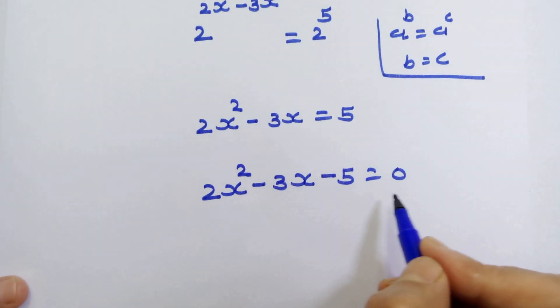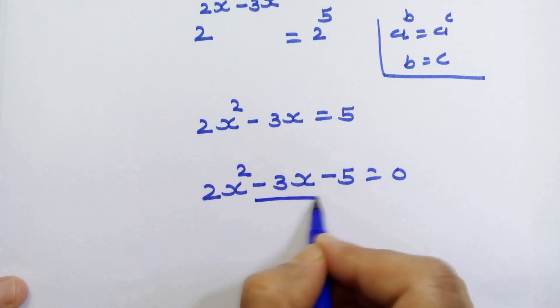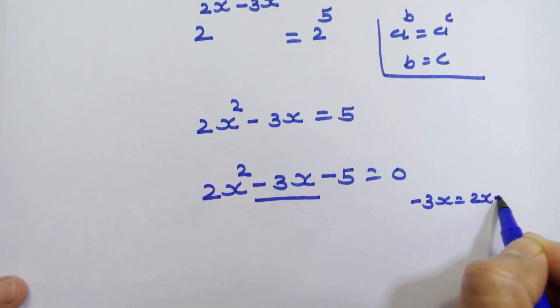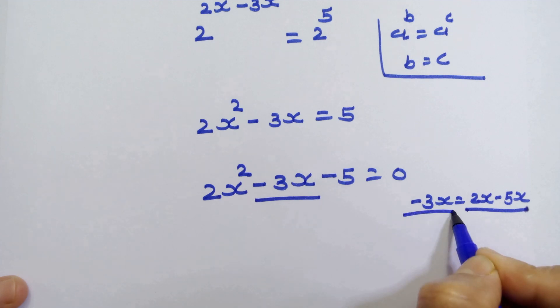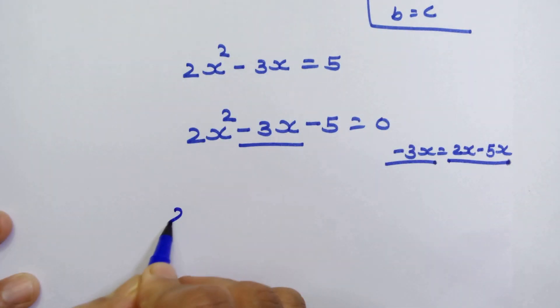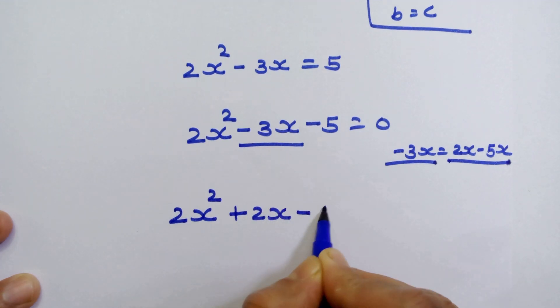Now we have quadratic equation here. Let's try to factorize this equation. This minus 3x is equal to 2x minus 5x. So we can write this instead of minus 3x. So our next step is 2x square plus 2x minus 5x minus 5 is equal to 0.